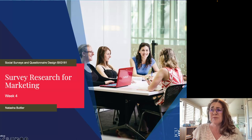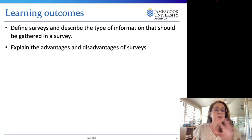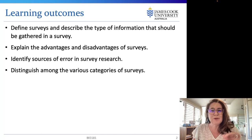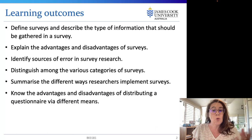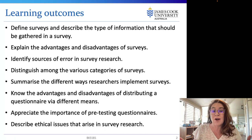The learning outcomes for this week are: to be able to define surveys and describe the type of information gathered; to explain the advantages and disadvantages of surveys; to identify sources of errors in survey research; to distinguish among categories of surveys; summarize different ways researchers implement surveys; know the advantages and disadvantages of distributing a questionnaire via different means; appreciate the importance of pre-testing; and consider the ethical elements of survey research.